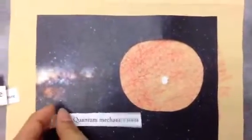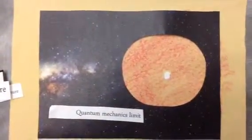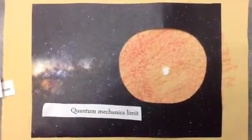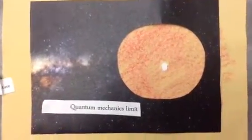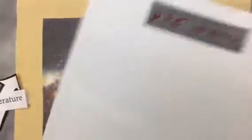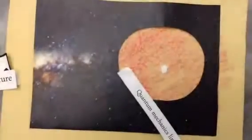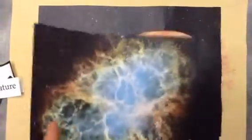But eventually, it reaches a quantum mechanics limit. That's when the electrons can no longer be pushed together any further. So at this point, then your protons and electrons will fuse together to create neutrons and neutrinos. That generates a massive amount of energy that blows the surface away and creates the supernova.